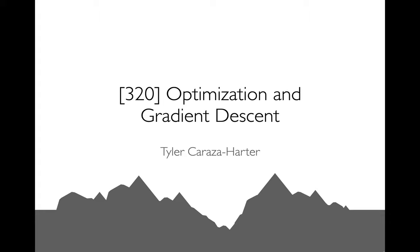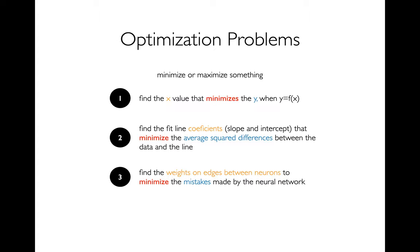In this lecture, we're going to be talking about optimization, and in particular, we're going to be learning a very important algorithm for optimization called gradient descent. Whenever we're talking about optimization, we're generally trying to either minimize something or maximize something.